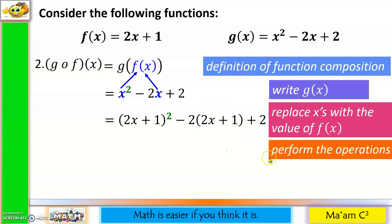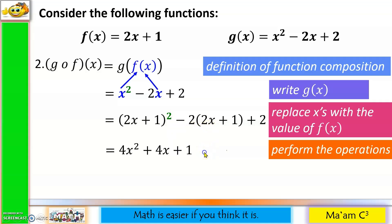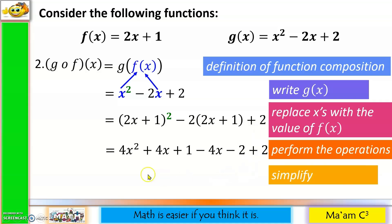Now perform the operations. Knowledge in squaring binomials is an advantage here. 2x squared is 4x squared. 2 times 2x is 4x, and 4x times 1 is 4x. 1 squared is 1. Negative 2 times 2x is negative 4x. Negative 2 times 1 is negative 2. Then we simplify: 4x squared remains. Positive 4x and negative 4x cancel. Negative 2 and positive 2 cancel, leaving plus 1.